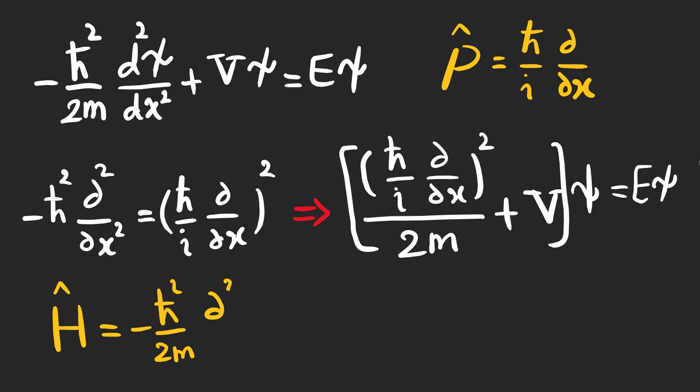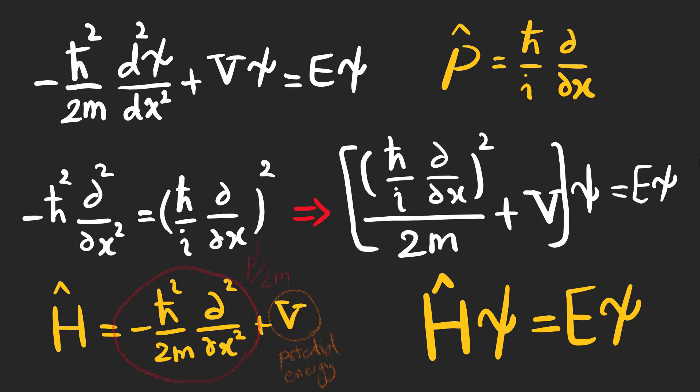We can introduce a new operator called h hat which is like the Hamiltonian in classical mechanics. And finally the time independent Schrödinger equation can be written as h psi equals E psi.